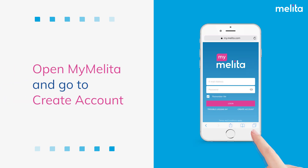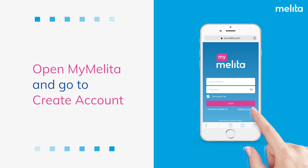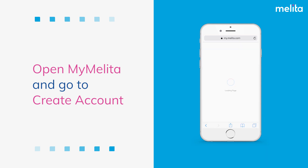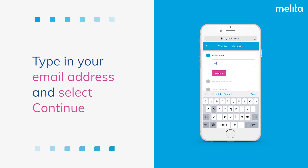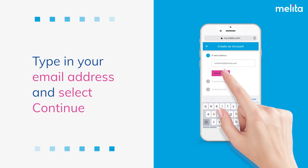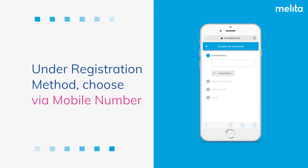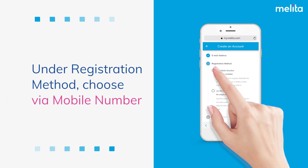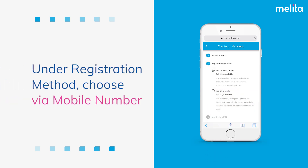Open MyMelita and go to Create Account. Type in your email address and select Continue. Under Registration Method, choose Via Mobile Number.